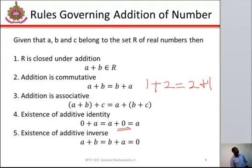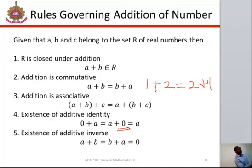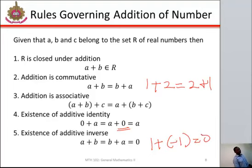Then the fifth rule is existence of additive inverse — that means if you add a particular number to its inverse, you are going to get zero. For example, 1 plus minus 1 gives you zero. The additive inverse is minus that element — in this case, it will be minus 1.